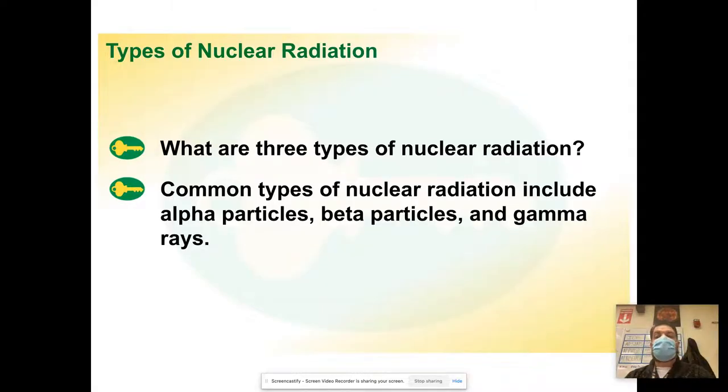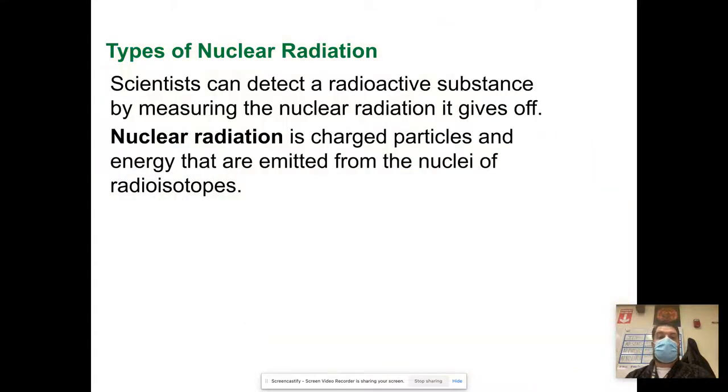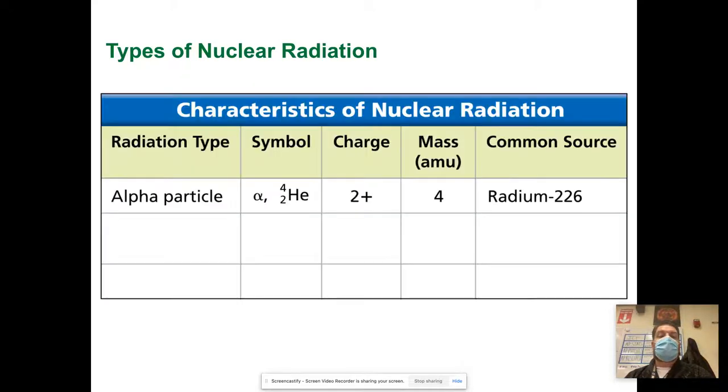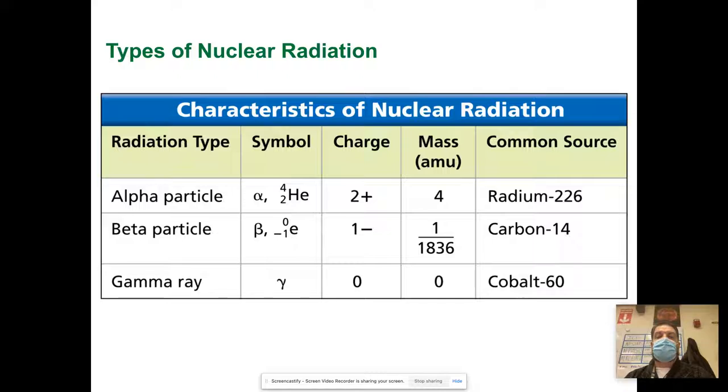What are three types of nuclear radiation? There's alpha particles, beta particles, and gamma rays. Scientists can detect radioactive substances by measuring the nuclear radiation they give off. Nuclear radiation is charged particles and energy that are emitted from the nuclei of radioisotopes. An alpha particle has a plus two charge, a beta particle has a negative one charge, and a gamma ray is electromagnetic radiation, not necessarily a charge.